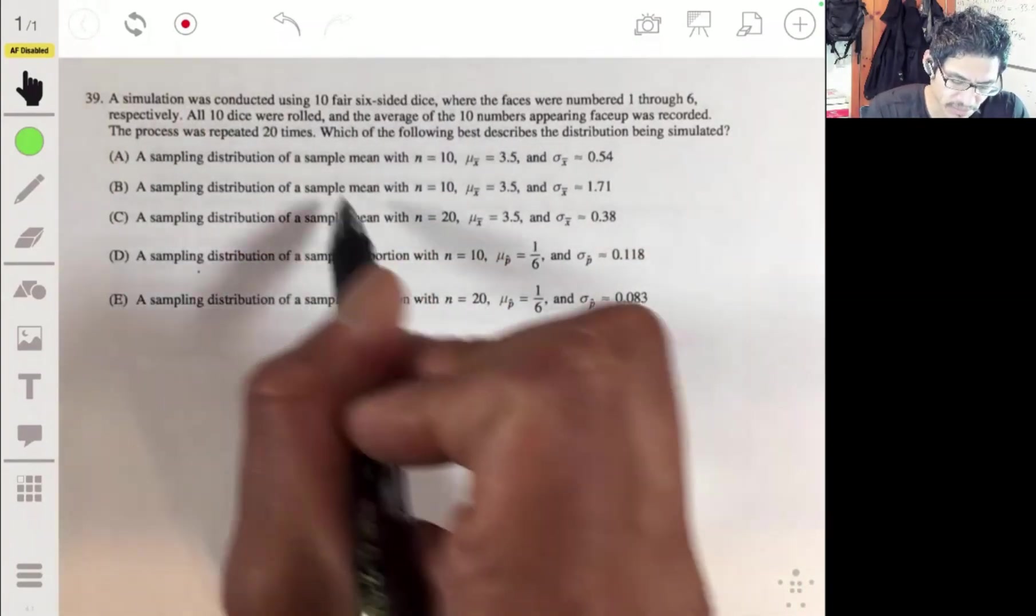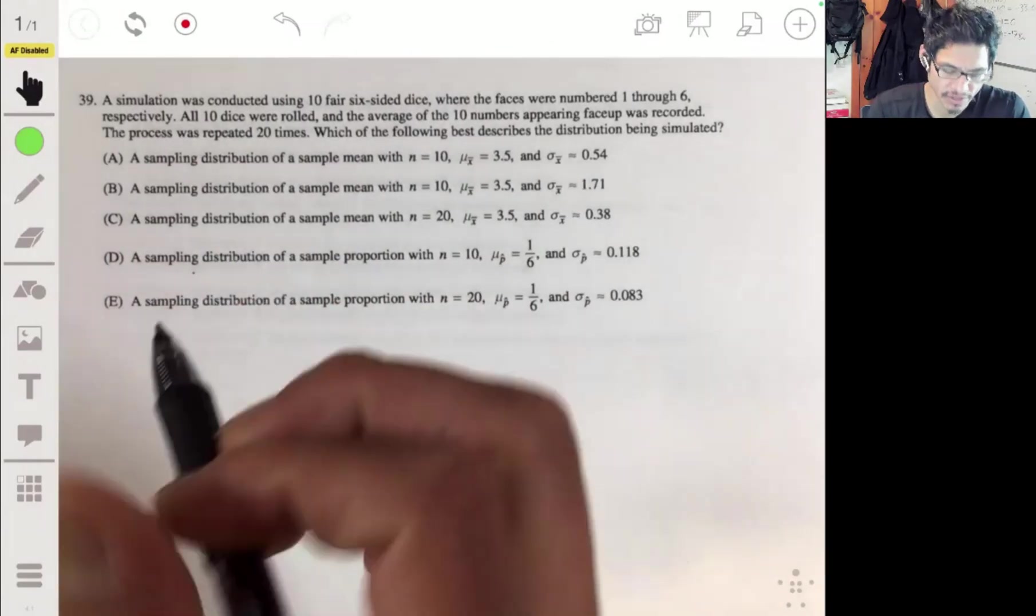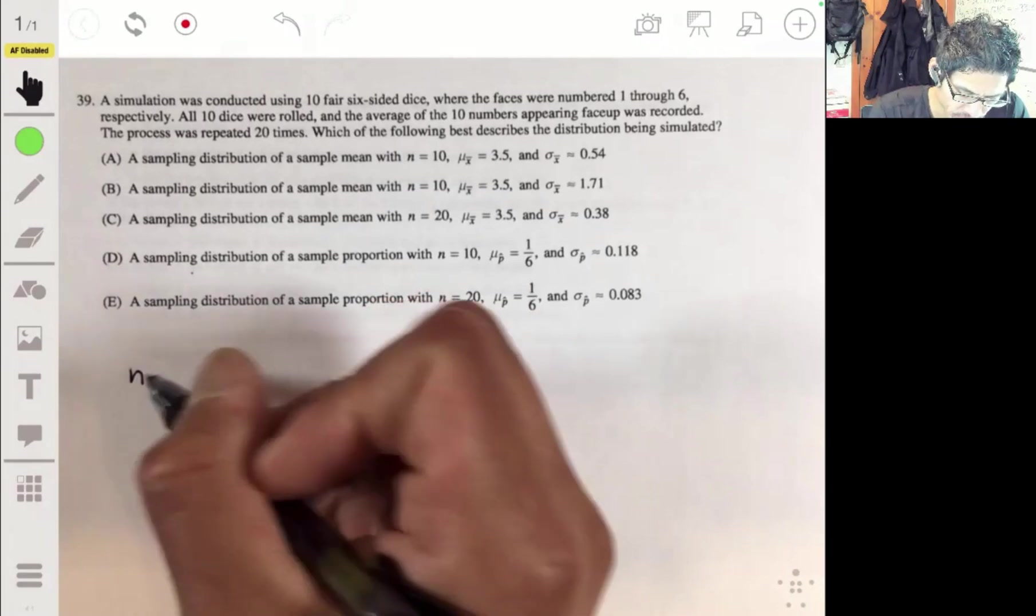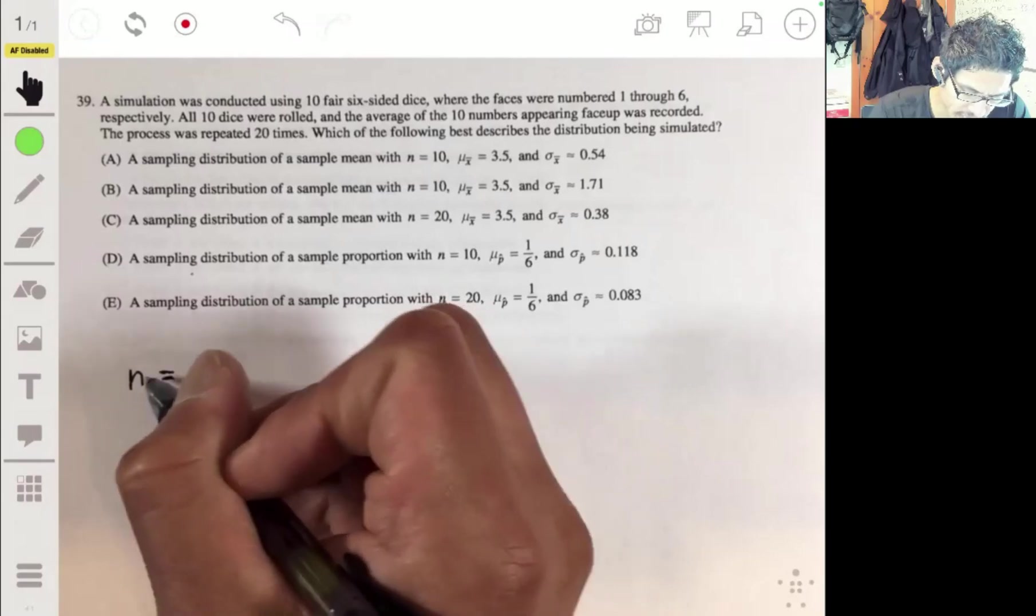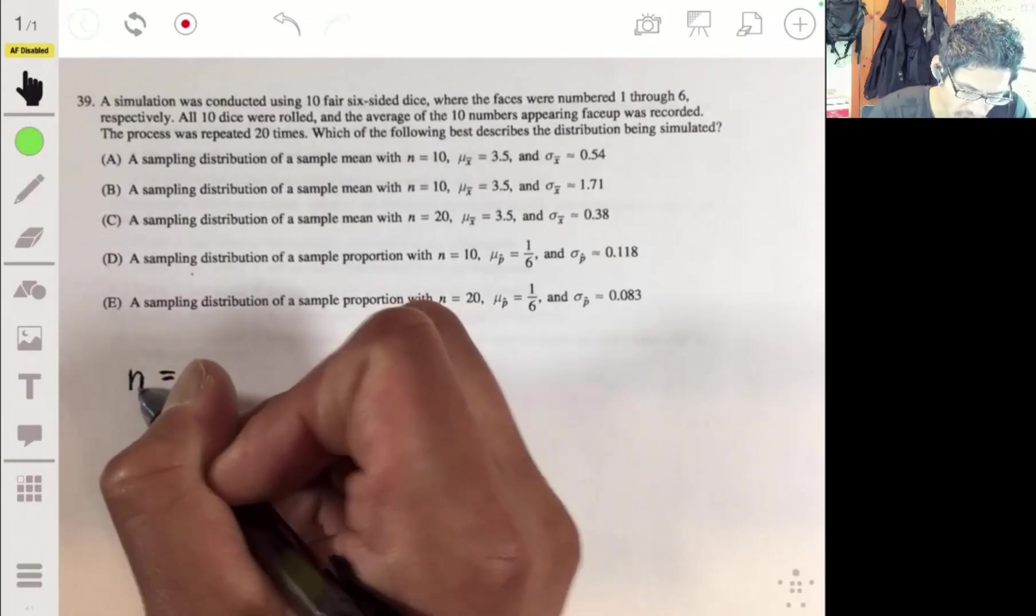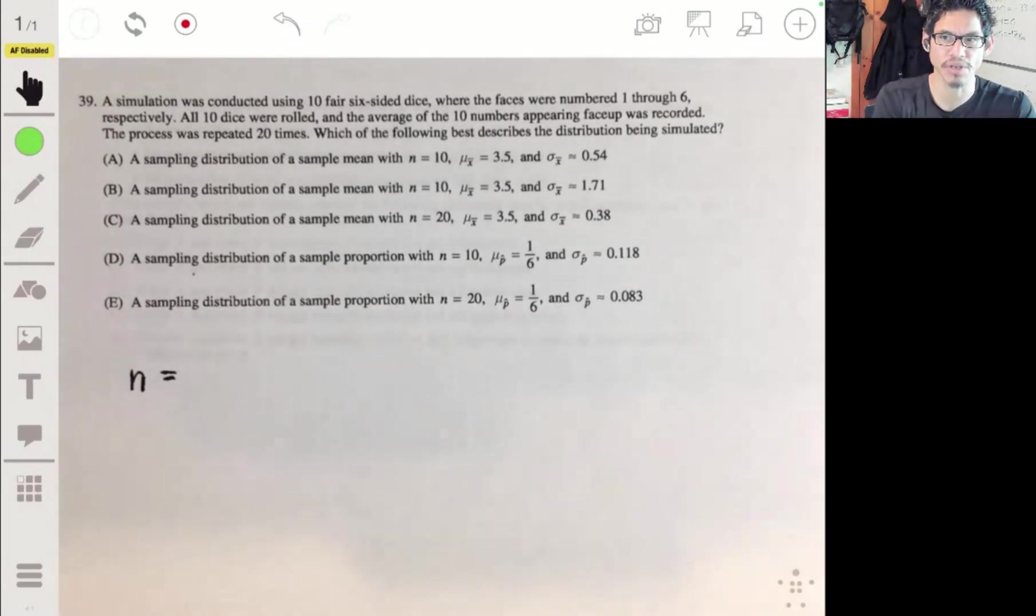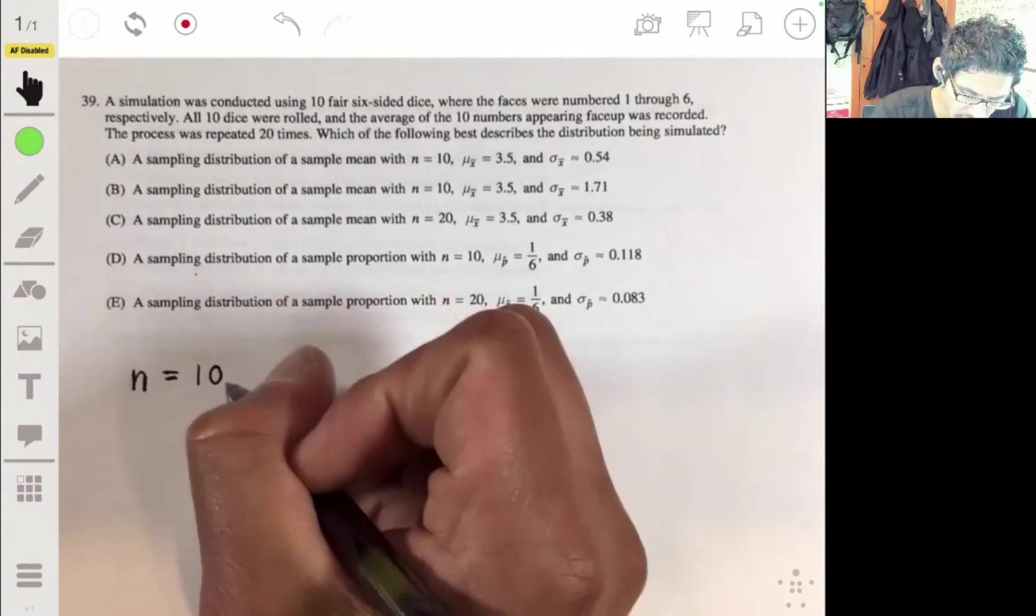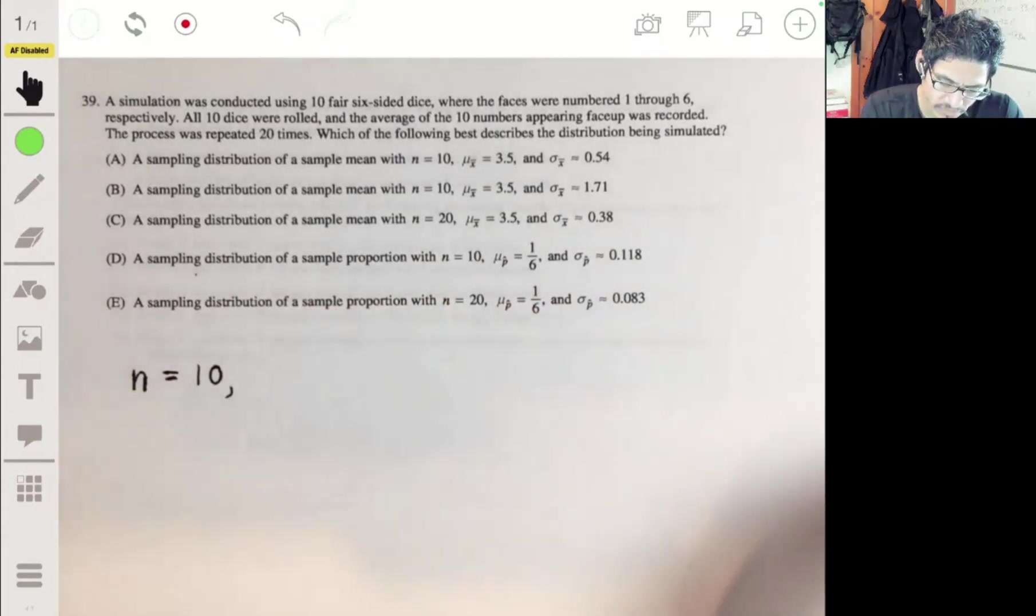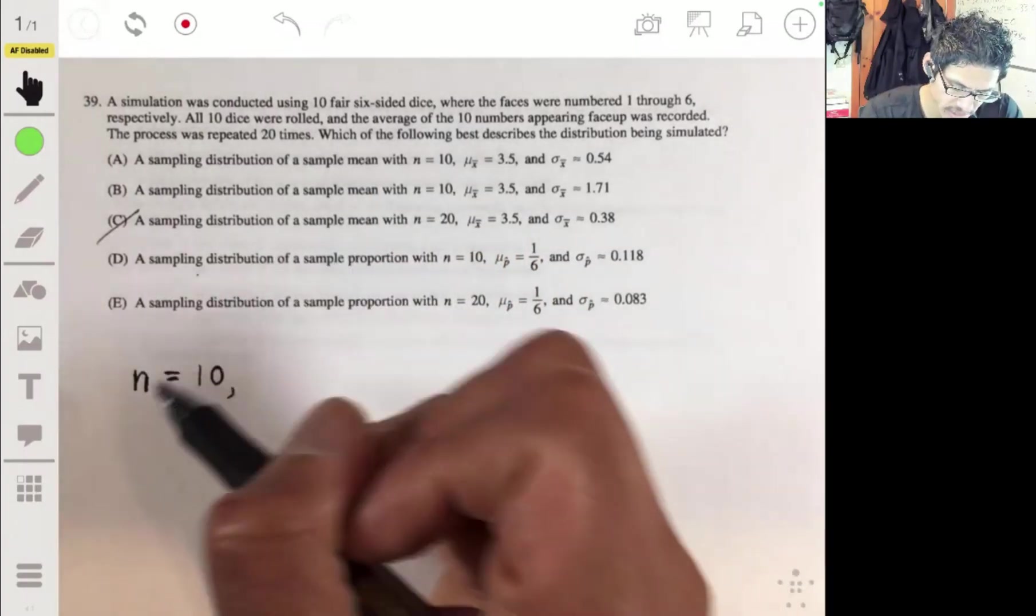With the sampling distribution, you're going to have the number of individuals in each trial be N. Not the number of trials, but the number of individuals, or in this case, the number of dice in each trial, so N will be 10. Right away, we can eliminate C and E.